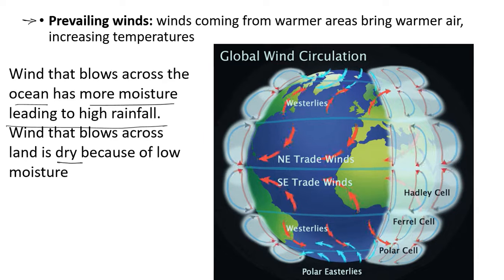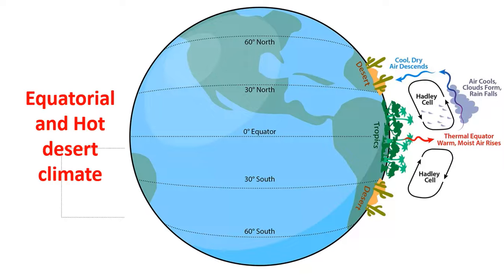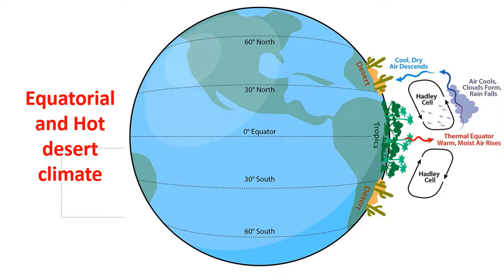Those are the factors affecting climate. In the next class, we are going to look at equatorial and hot desert climate, using the characteristics of the factors we just discussed. Thank you.